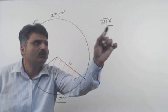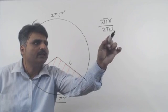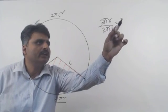That is 2 pi R over 2 pi L, which is obviously R by L.